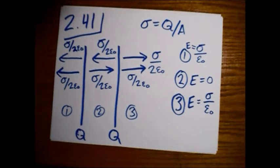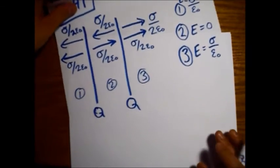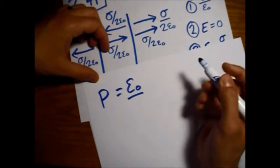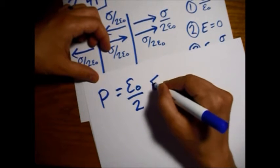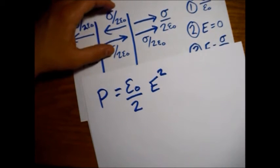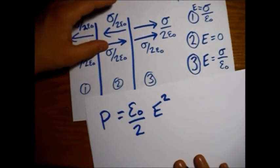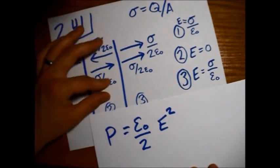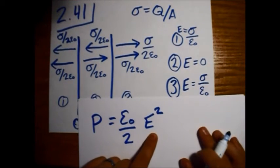Now we look at the pressure. So if we look at equation 2.52, I'll write it out here, which is pressure equals epsilon-naught over 2 E squared. So the pressure from the inside, there's no magnitude of E there, right? So we get 0.